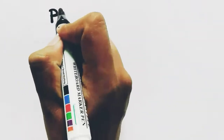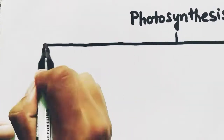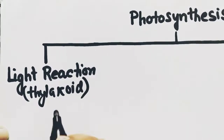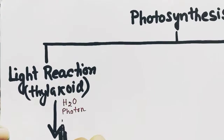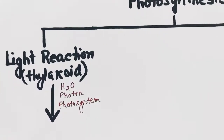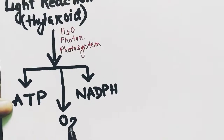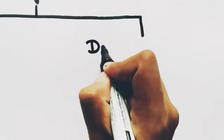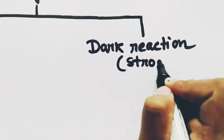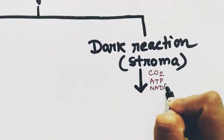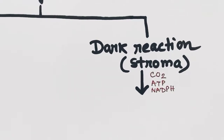Now we will do a recap. Photosynthesis is divided into two reactions. The light reaction occurs in the thylakoid membrane and it needs light or photons, water, and photosystems, which will form ATP, NADPH, and oxygen. Another reaction is the dark reaction — it also occurs in daylight but it does not need light, and it occurs in the stroma. It takes carbon dioxide, ATP, and NADPH.